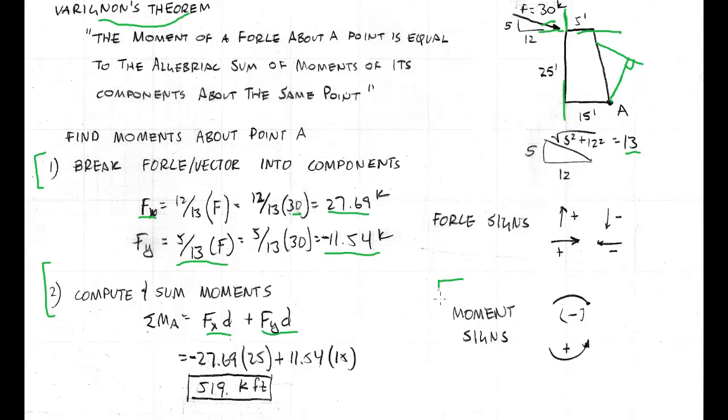We've got to remember moments have a different signing convention. This would be clockwise due to the X, so that is a negative moment. The Y is down, it's a negative force, but it's counterclockwise around A, so that is a positive moment.